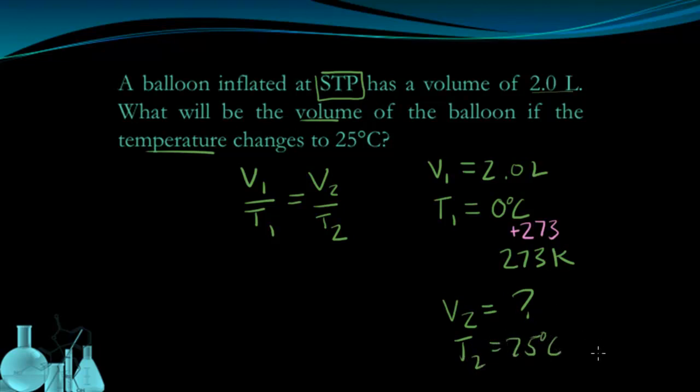And T2 says it's 25 degrees Celsius, which again I need to change to Kelvin temperatures. So plus 273 is going to give me 298 Kelvin as my T2 temperature, my final temperature.